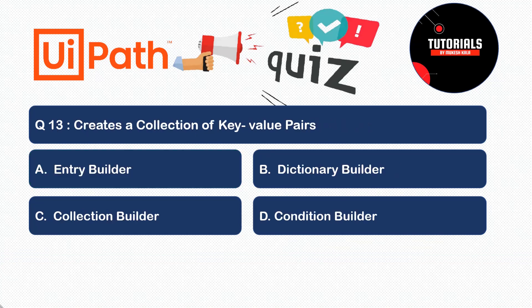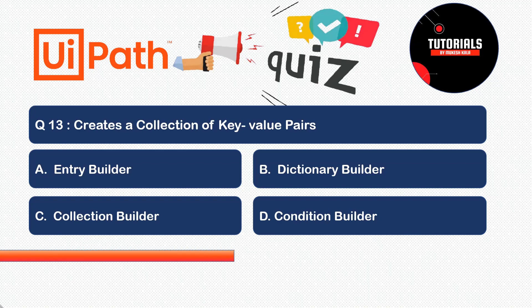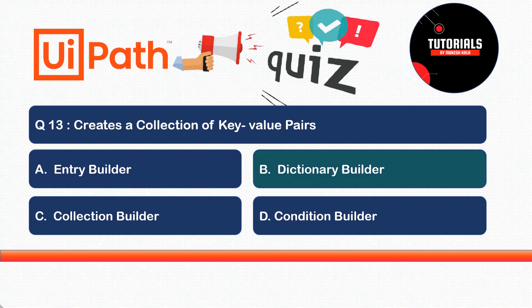Question thirteen: I have to create a collection that stores values in key-value pairs - should I use (a) Entry Builder, (b) Dictionary Builder, (c) Collection Builder, or (d) Condition Builder? The correct answer is Dictionary Builder. Dictionaries store values in key-value pairs - you can think of it as the config object from RE Framework. Dictionary Builder is a new builder embedded in the 2022.10 update.